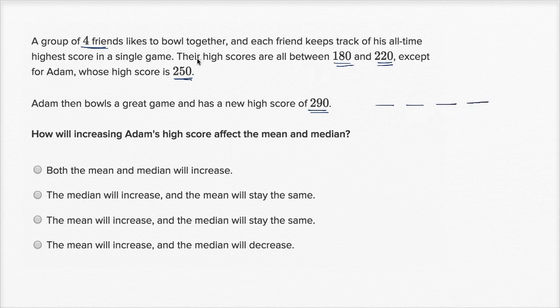Their high scores are all between 180 and 220, except for Adam, whose high score is 250. So before Adam bowls this super awesome game, the scores look something like this. The lowest score is 180, Adam scores 250.